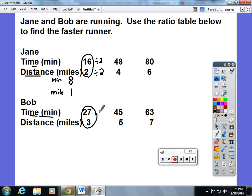I know that 27 and 3 are both divisible by three, so that gets me down to nine and one: nine minutes per one mile. Now this is tricky. You have to go back and kind of think to yourself, who is the fastest runner?